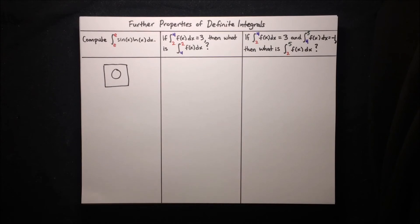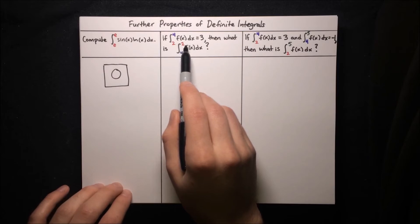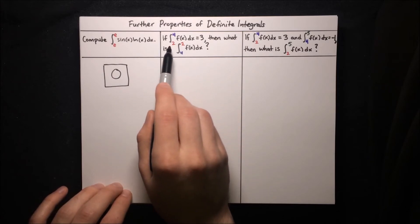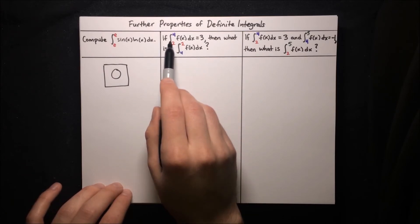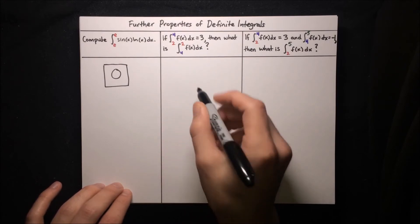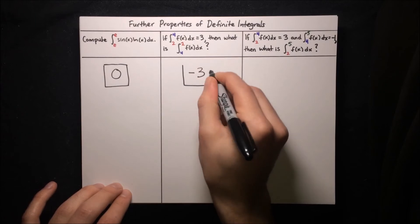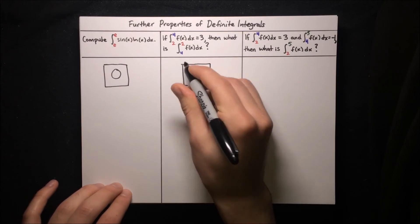Next problem: if the integral from 2 to 4 of f(x) dx equals 3, then what is the integral from 4 to 2 of f(x) dx? This integral from 4 to 2 is just reversing the direction of the original integral from 2 to 4, so the sign gets reversed. Instead of positive 3, it's negative 3.